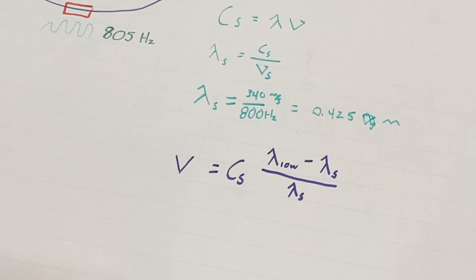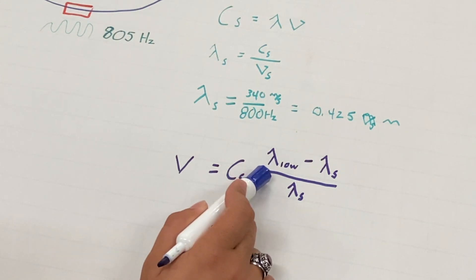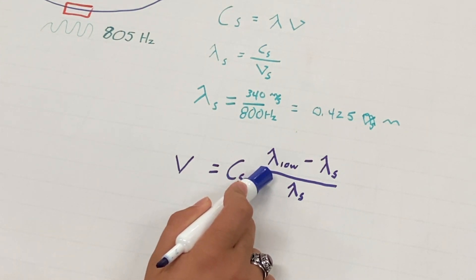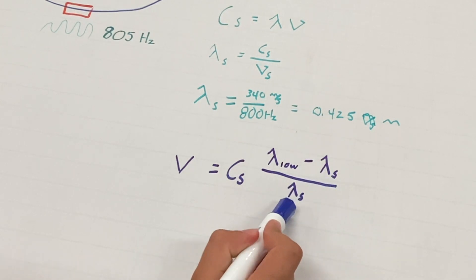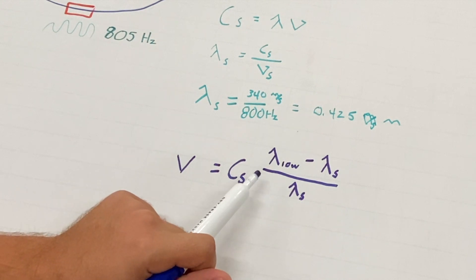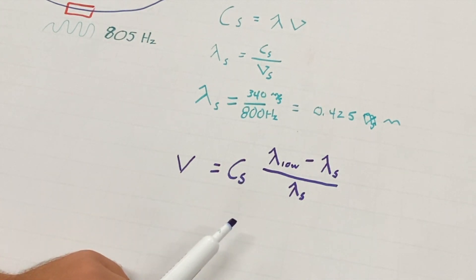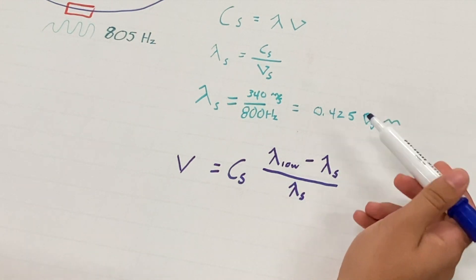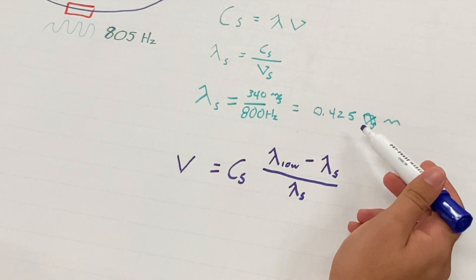We're going to calculate the velocity of the phone using the following equation, where the velocity equals the speed of sound times the wavelength as the phone moves away from the sound minus the wavelength of the source divided by the wavelength of the source. We went ahead and calculated the wavelength of the phone as it moves away from the sound source to be 0.428 meters. And above, we already calculated the wavelength of the source to be 0.425 meters.